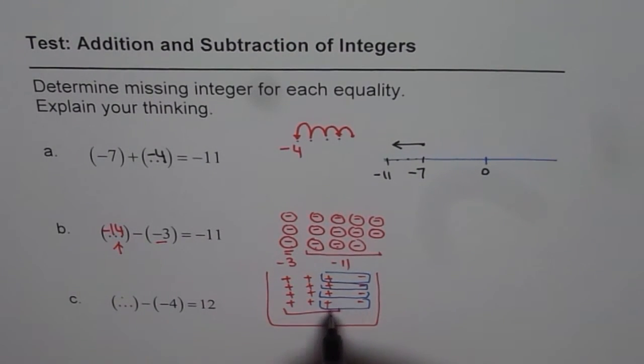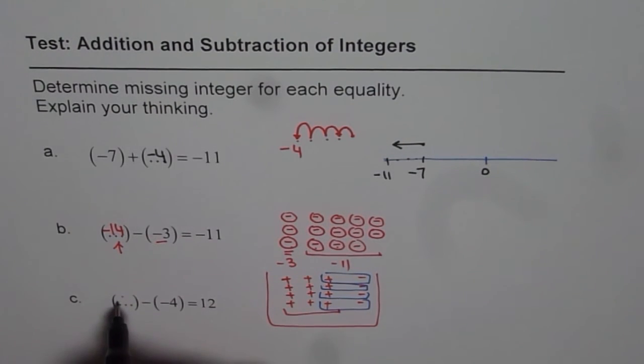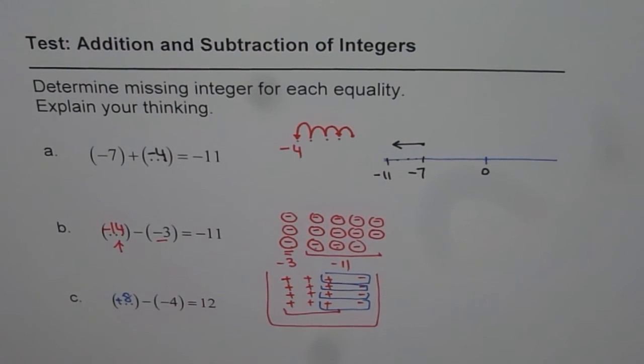So, if they make 0, we are left with 4 plus 4, 8. So, this should be plus 8. So, plus 8 take away minus 4 is equal to 12. So, that is how we can solve such questions.